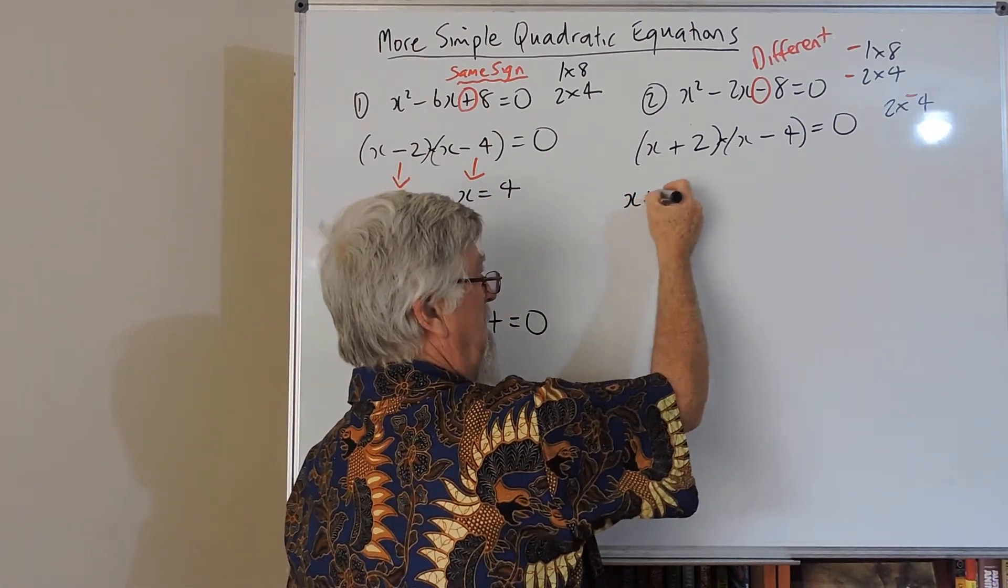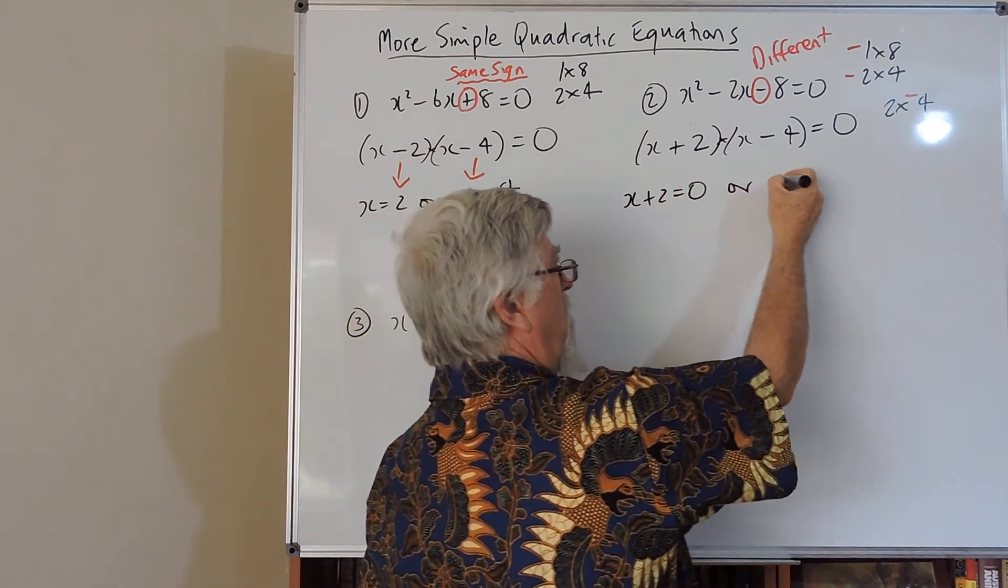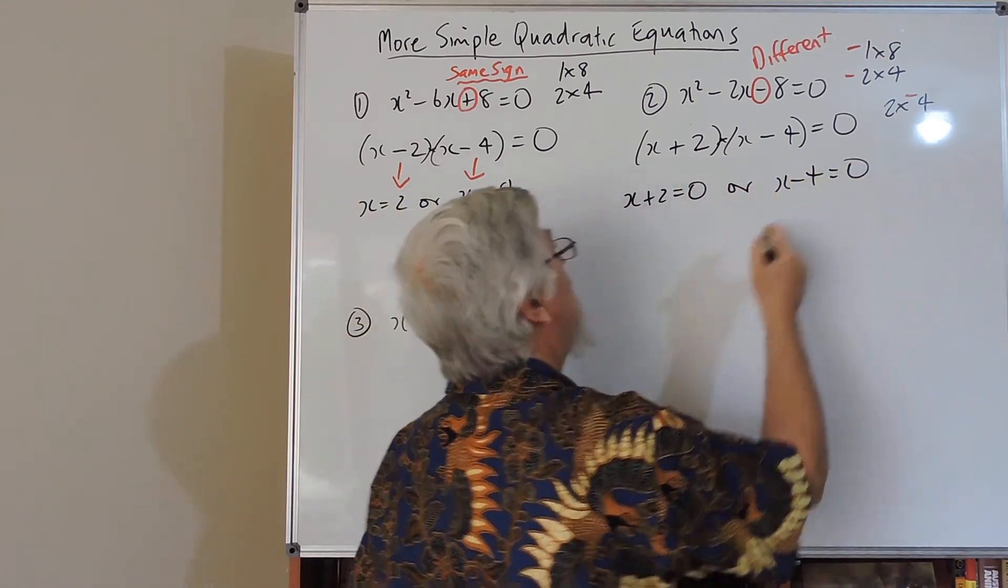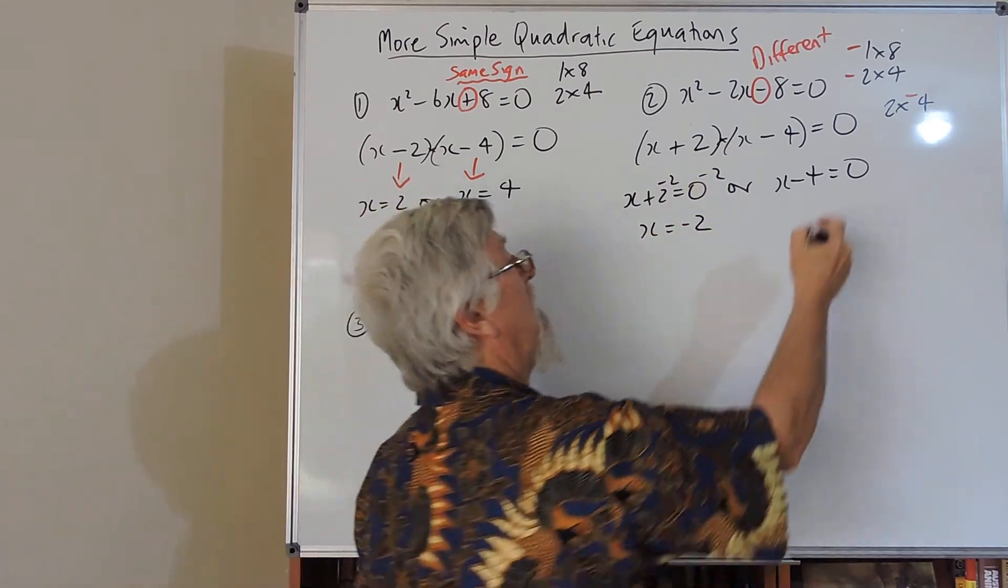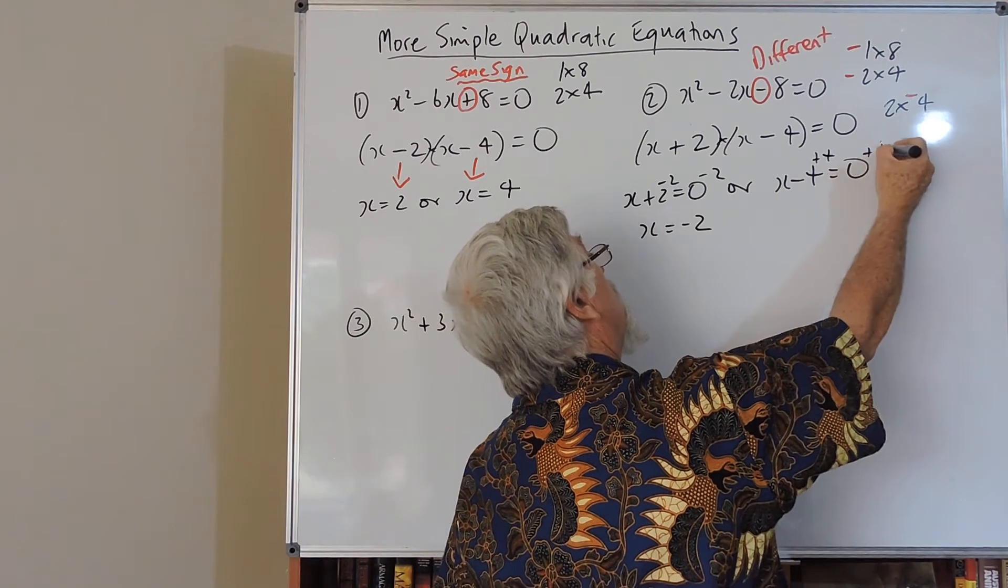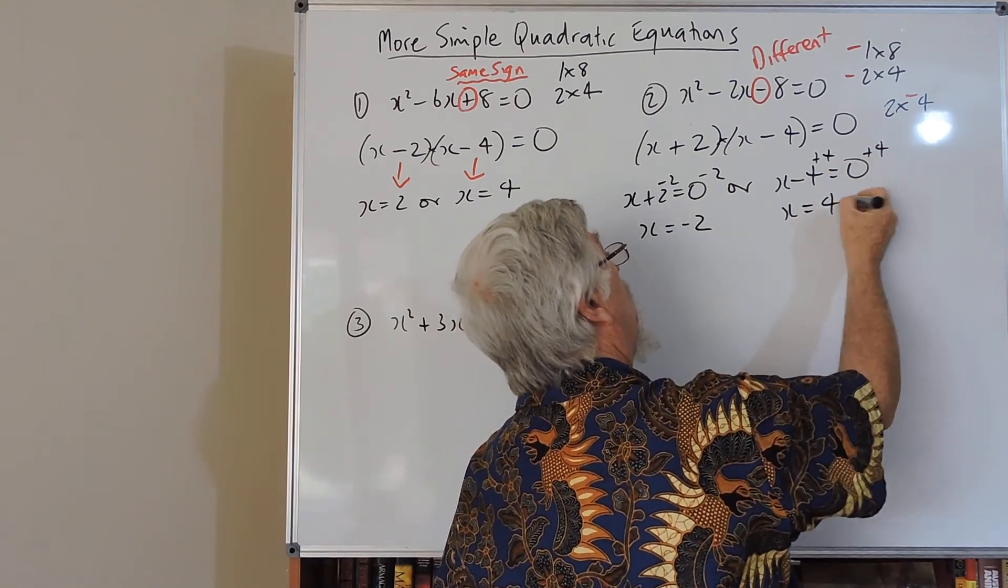I go back to slowly again. x plus 2 equals 0 or x minus 4 equals 0. So if I did take 2 here, I'd end up with x minus 2.